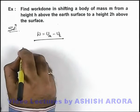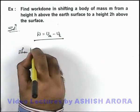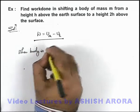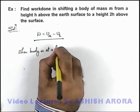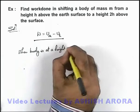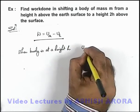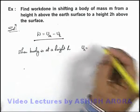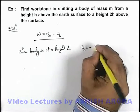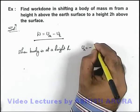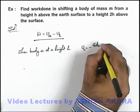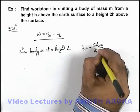And here we can write, when body is at a height h above the earth's surface, its potential energy U_h we can write as direct expressions we have studied in the previous sections, that it is minus GMm over R_e plus h.